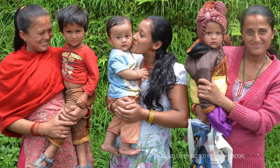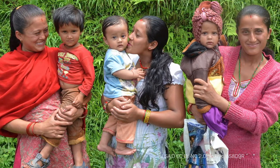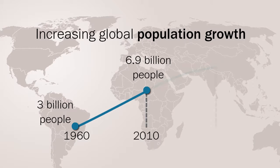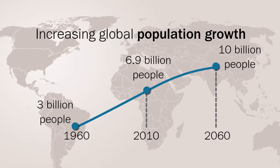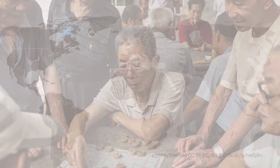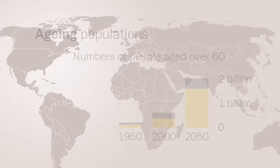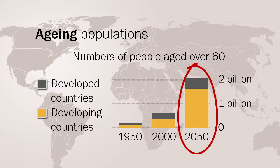Population-related risk factors are likely to increase global visual impairment in the future. One risk factor is increasing global population growth: in 1960 the global population was approximately 3 billion; in 2010 it was 6.9 billion; and by 2060 it is predicted to be nearly 10 billion. A second risk factor is ageing populations — numbers of people aged over 60 are increasing, especially in low and middle income countries. These factors have huge implications for age-related blindness, and appropriate service delivery growth needs to be in place.